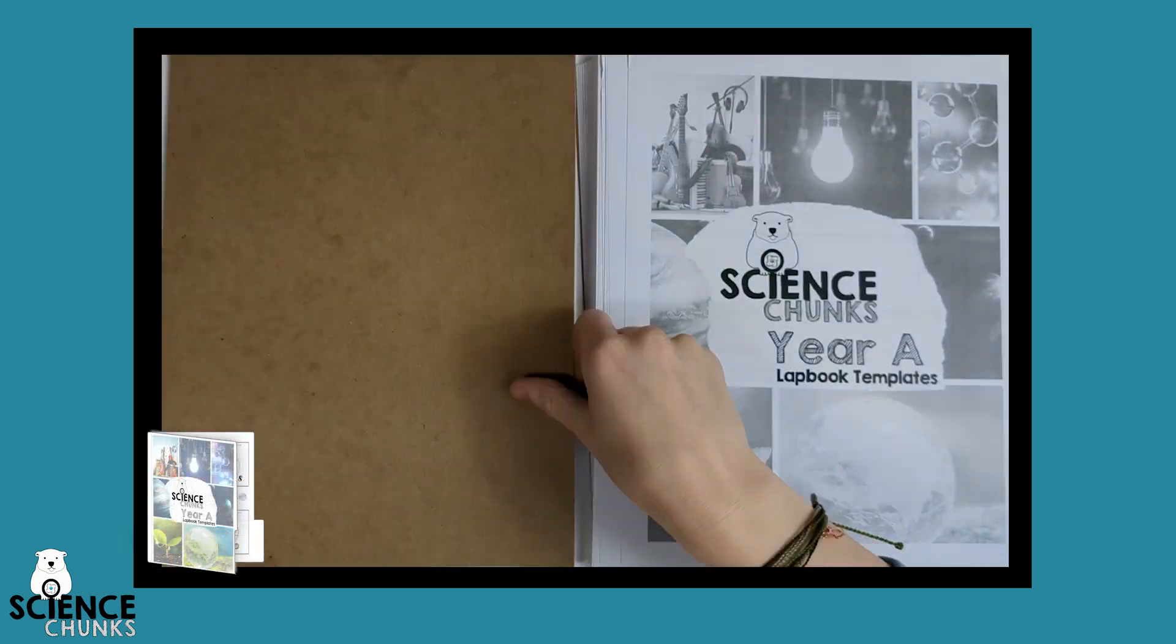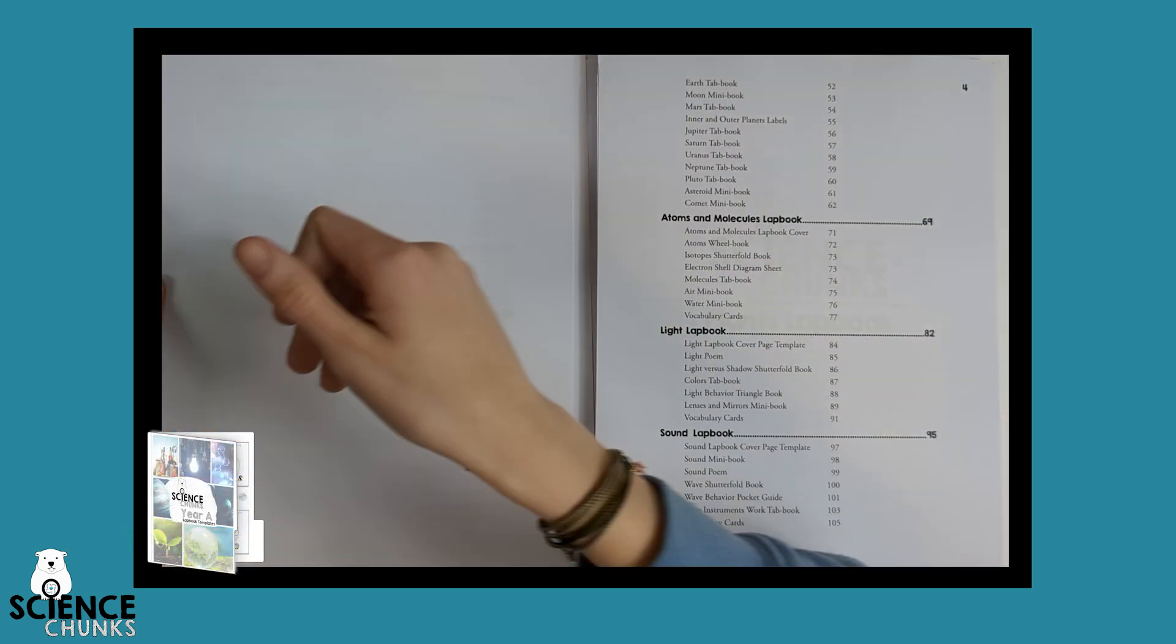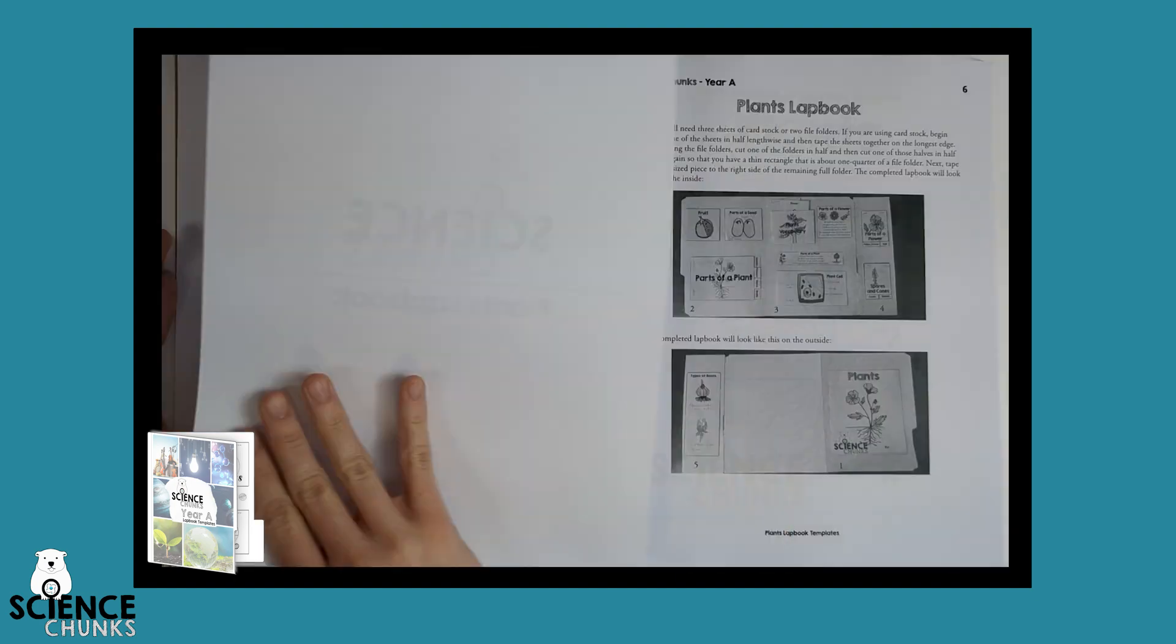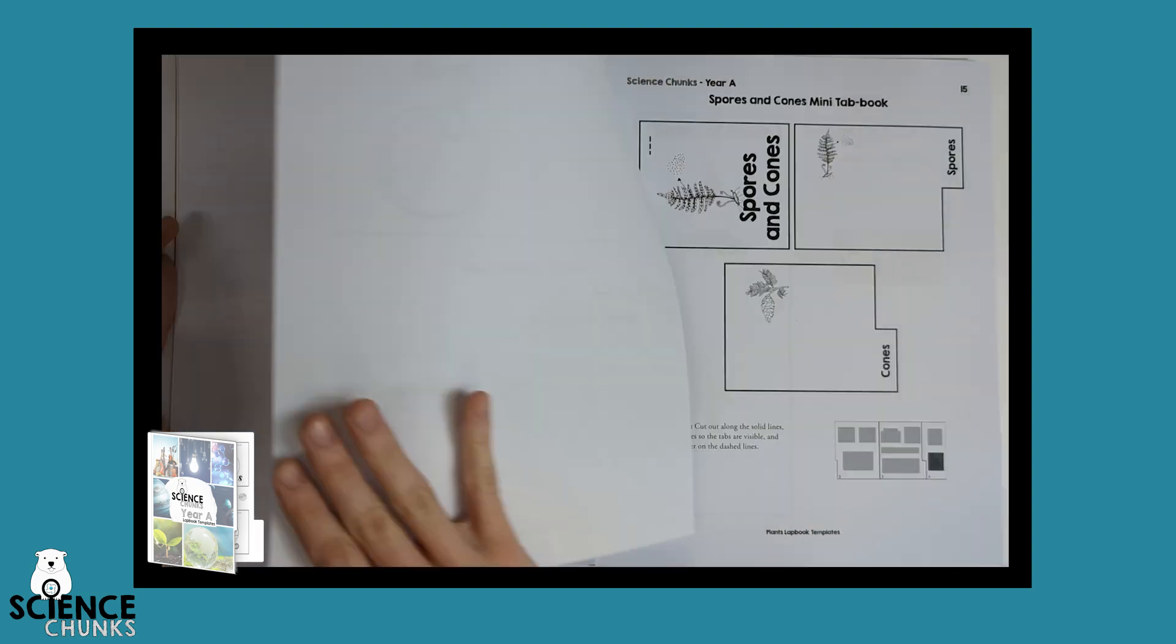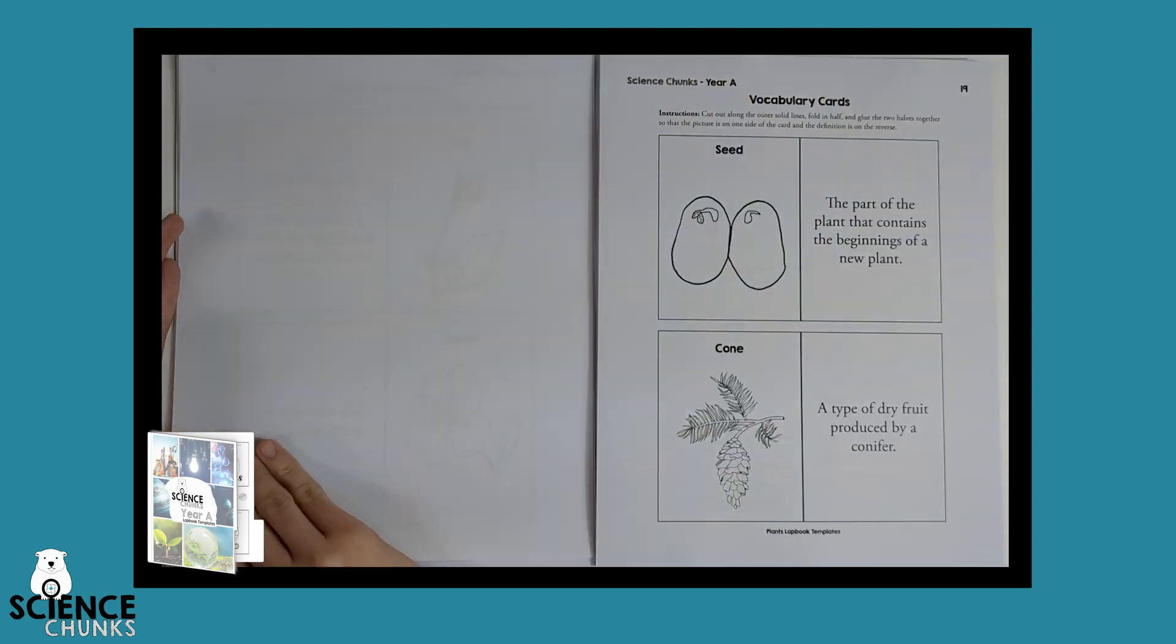If you choose the Printed Bundle Plus option, you'll also get the lapbooking templates. These templates include lapbook overview sheets for each unit and all the mini books you'll need to make a lapbook for each unit.